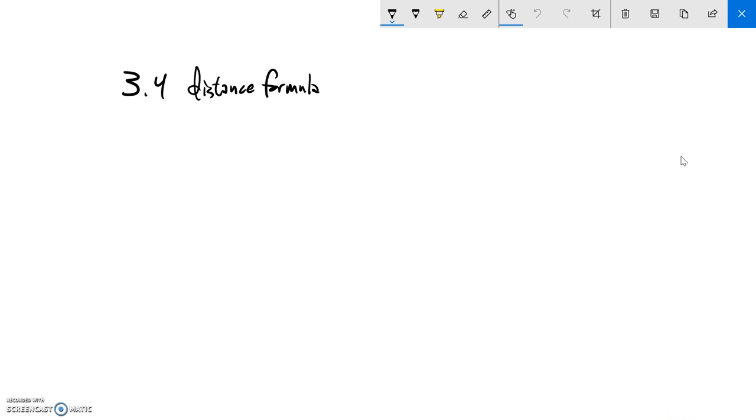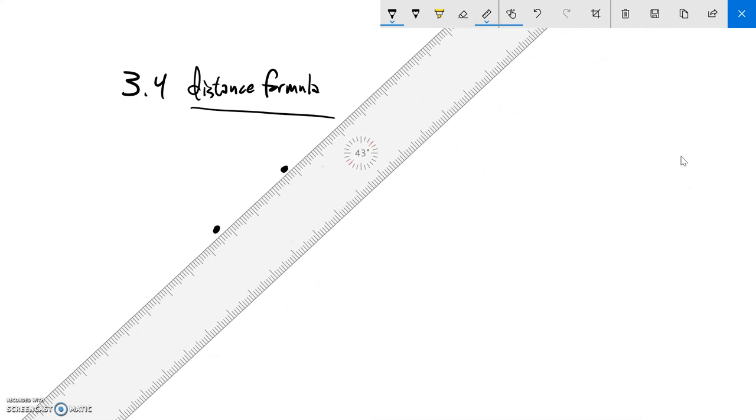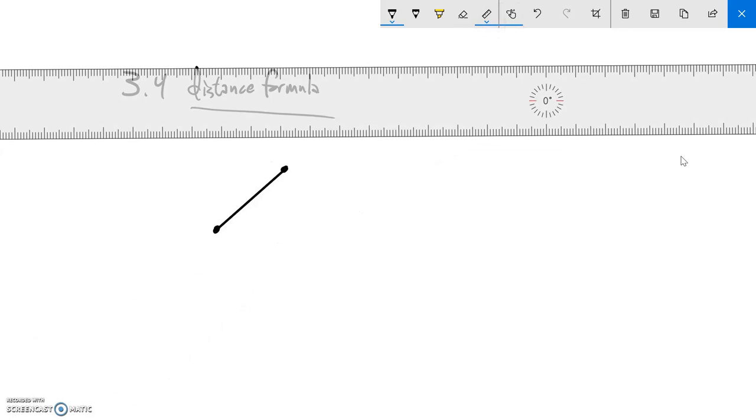So this is section 3.4 and we are just going to talk about what's called the distance formula. The distance formula is basically this idea that if we have some segment, some little piece of a line like that, how can we determine its length if we know points for it?